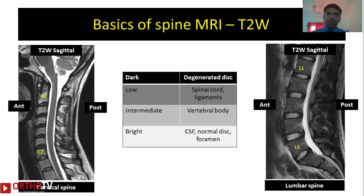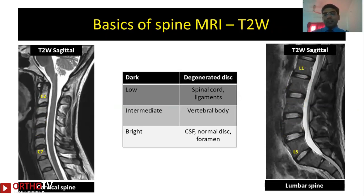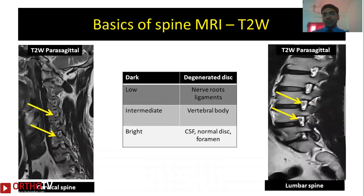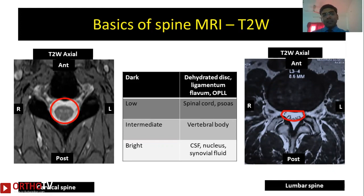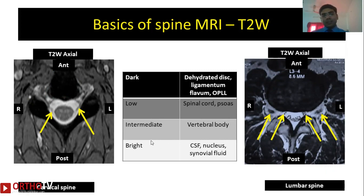On the T2-weighted sagittal image, apart from the bright CSF, you can see the intermediate intensity of the vertebral body; the discs appear bright when hydrated and become dark when they degenerate or are dehydrated. A T2-weighted parasagittal cut provides good information about foraminal structures. On a T2-weighted axial image you can see the dural sac and spinal cord in the cervical and thoracic spine, whereas nerve roots are seen in the lumbar spine. The structure anterior to the dural sac is the disc, and posterior to it are the facet joints. The traversing and exiting nerve roots at different spinal levels and any compression on them can be well visualized on the T2-weighted axial image.